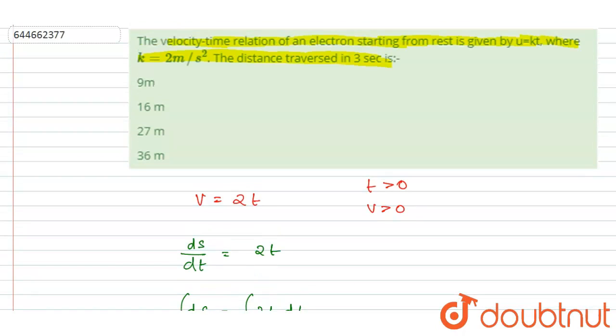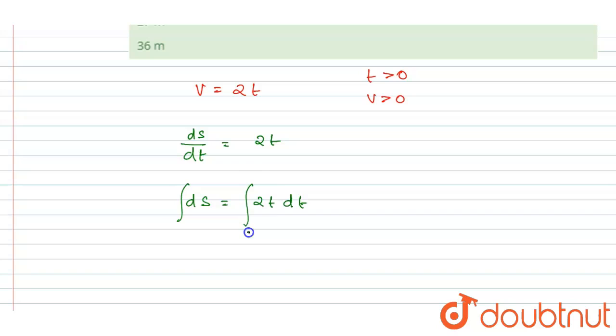So let's calculate the displacement for the given time interval. If you see, it starts from rest, so initially the velocity was 0. And in 3 seconds we have to calculate the distance.